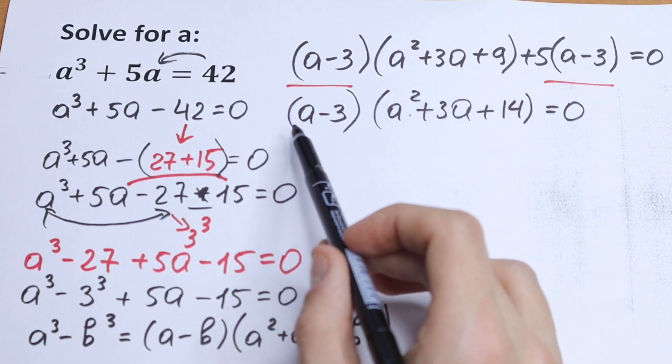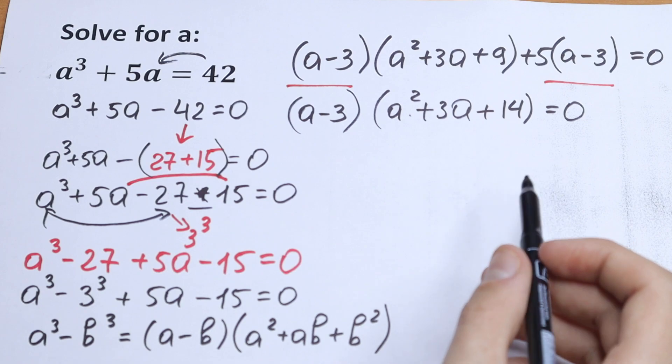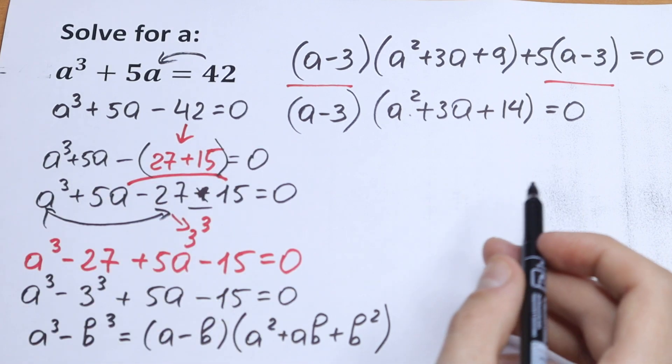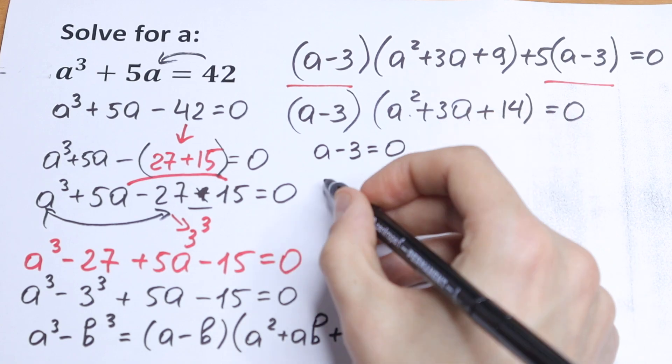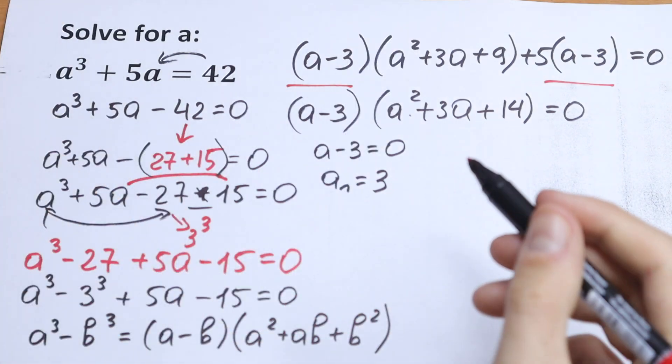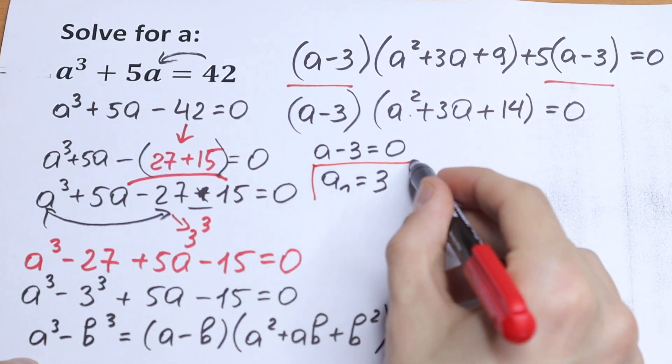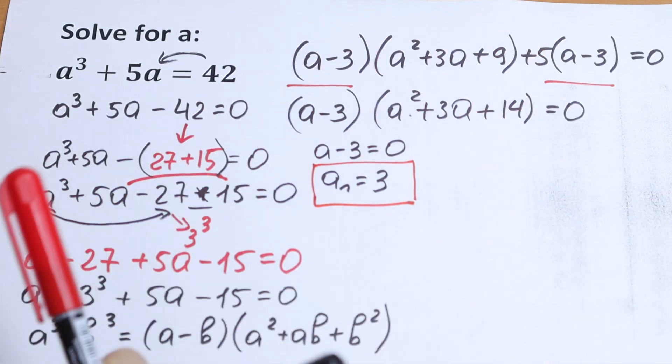We have a product. So this parentheses will be equal to 0 or this parentheses equal to 0. Let's start with the first one. So we will have our a minus 3 equal to 0. So our a first equal to 3. This will be our first root. First answer a first equal to 3. Of course you can check it.